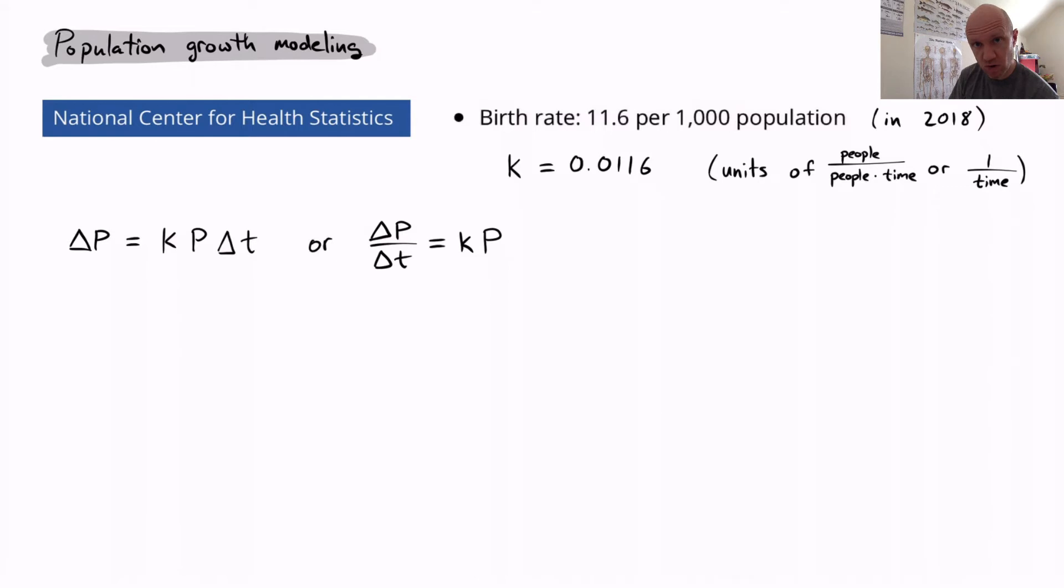So let's see if we can use this number to describe how the population would change from one year to the next. So I'm going to write delta P to mean the population change over the course of a year. Delta t is the change in time, which is one year. So the change in population, delta P, is k times P, that's the birth rate, times the total population, times delta t, the change in time.